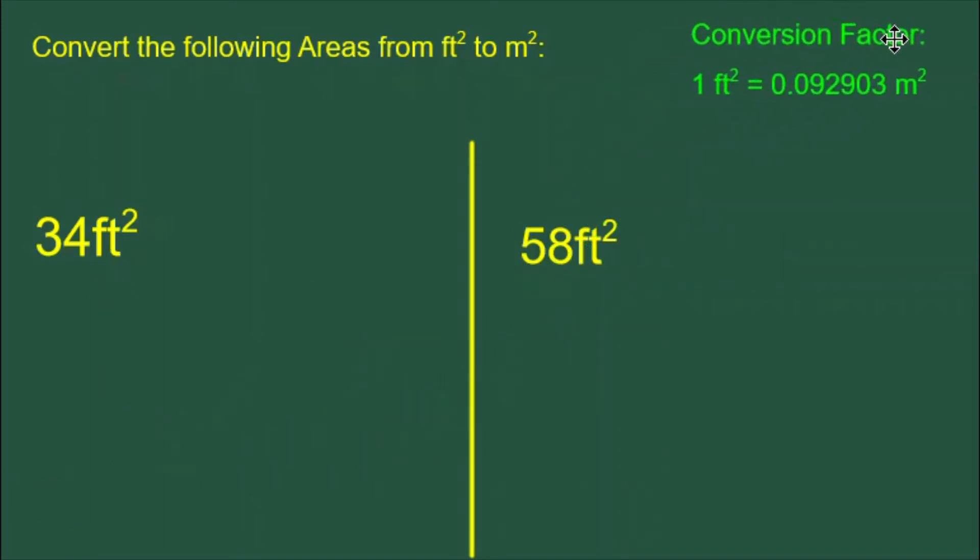To do this, the first thing we need is a conversion factor. The conversion factor is 1 foot squared is equal to 0.092903 meters squared.